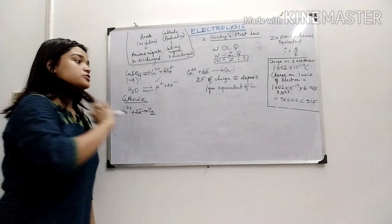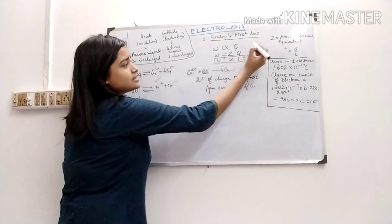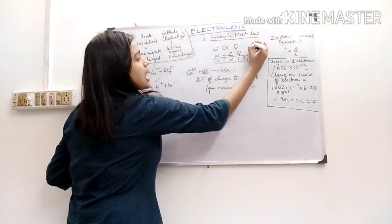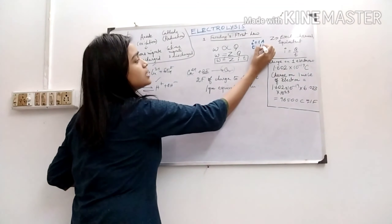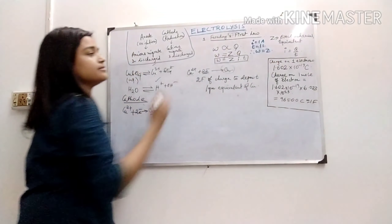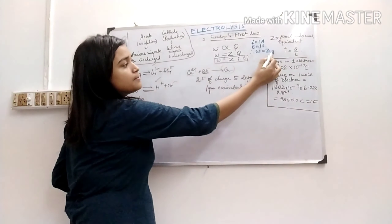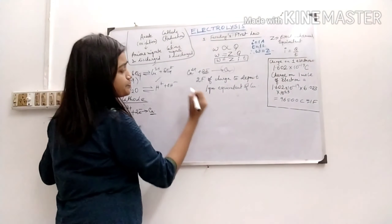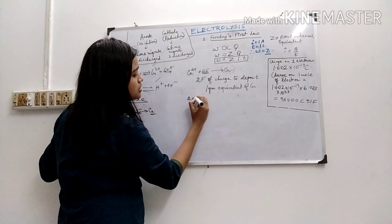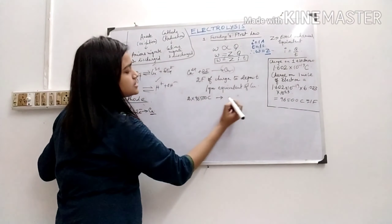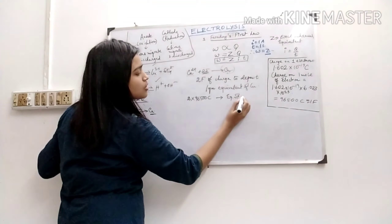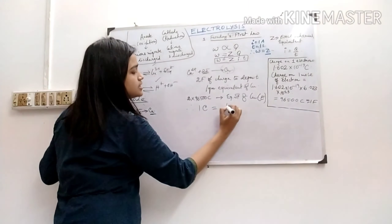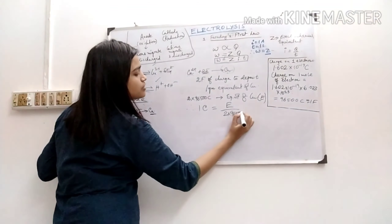One gram equivalent of copper is 108 grams divided by 2, which equals 32 grams. So copper requires two Faradays of charge to deposit one gram equivalent. When I is 1 ampere and time is 1 second — that is 1 coulomb — W equals Z. That means at one coulomb, Z grams of substance is deposited. So 2 × 96,500 coulombs deposits the equivalent weight E of copper.